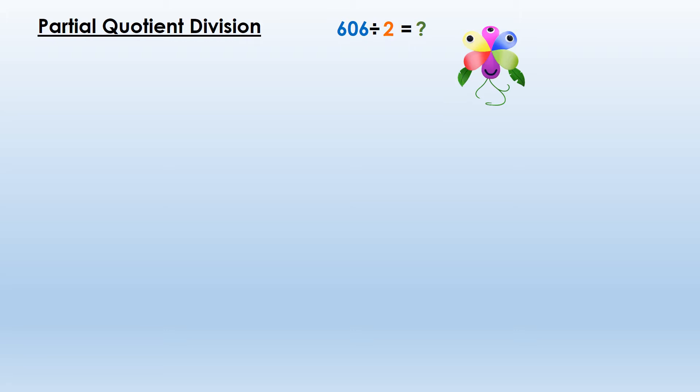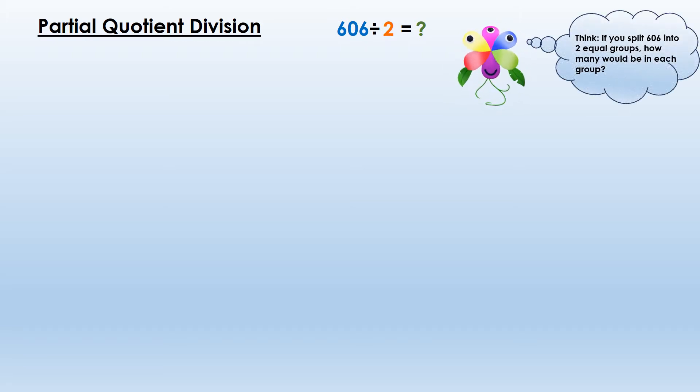The problem we're going to be working with today is 606 divided by 2, and that little green question mark is going to be the quotient — so in this problem we're solving for the quotient. When I see 606 divided by 2, I need to think: if you split 606 into two equal groups, how many would be in each group? For example, if I had 606 Pokémon cards and I wanted to split them between me and my sister Natalie, how many would each of us get?